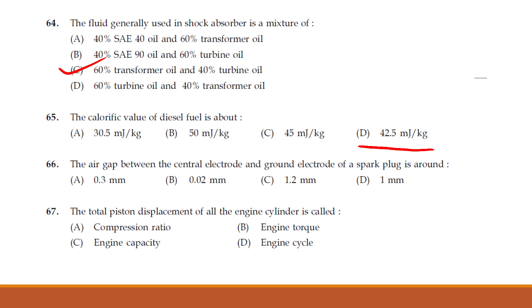The air gap between the central electrode and ground electrode of a spark plug is around — it is option D — 1 mm.